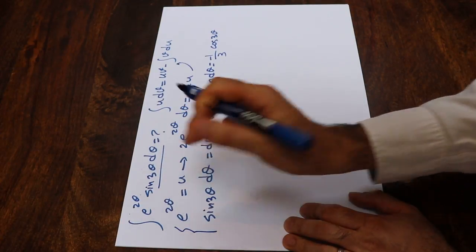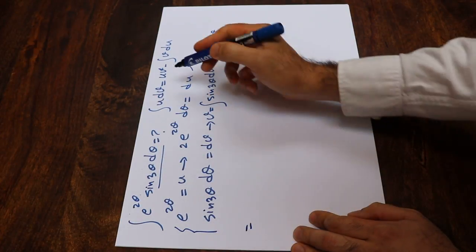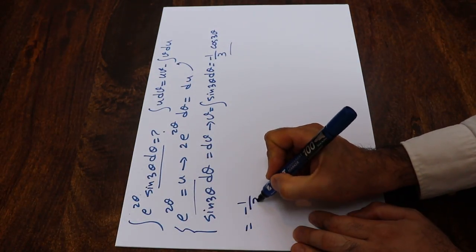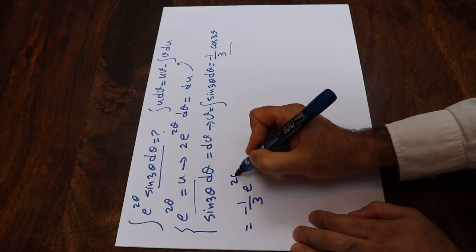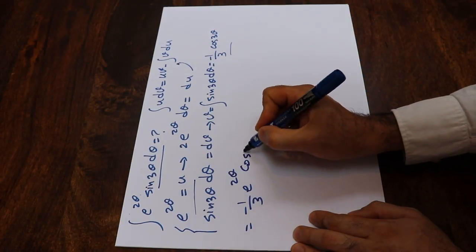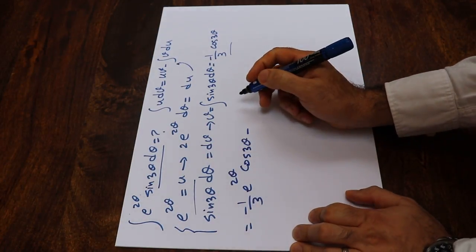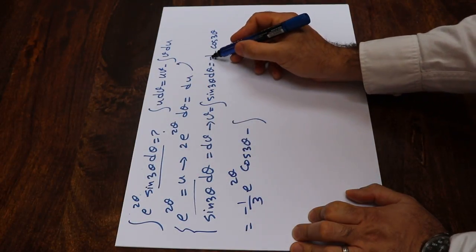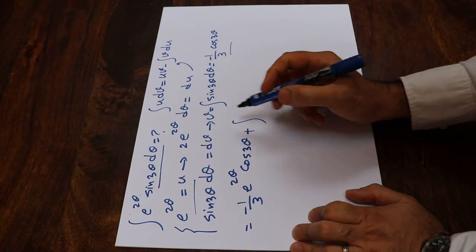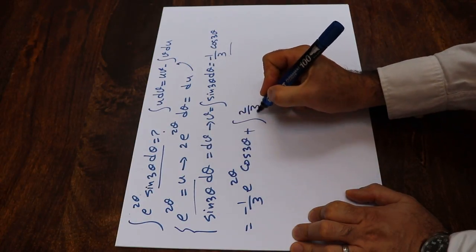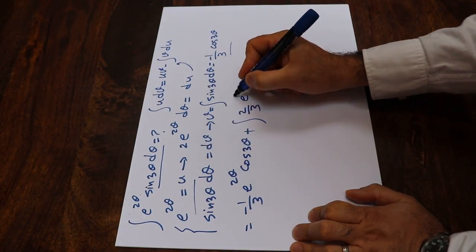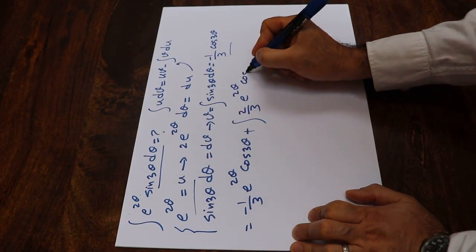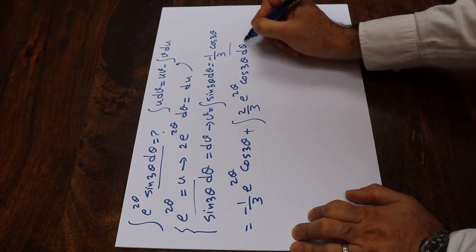So this integral equals U times V, that is minus 1/3 times e^(2θ) times cosine 3θ, minus the integral of V dU. The two negatives give a plus, so we get plus 2/3 times the integral of e^(2θ) times cosine 3θ dθ.